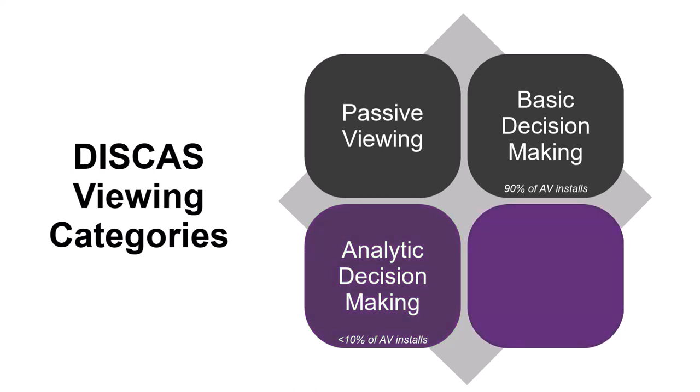The fourth category is full motion video. This might be something like a commercial theater, a corporate screening room, or even a high-end home theater. That's even a little bit more demanding.